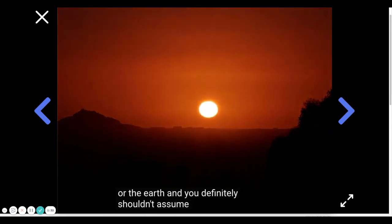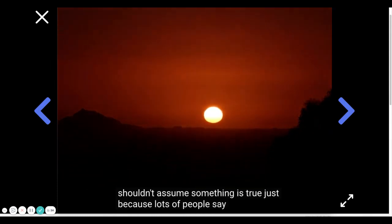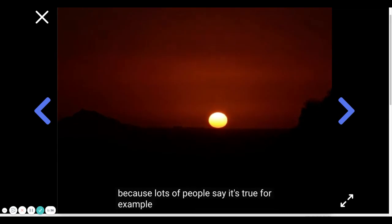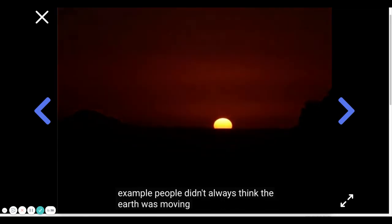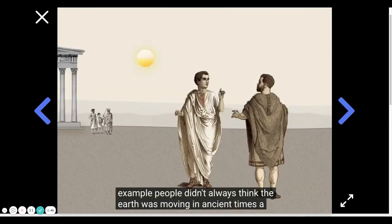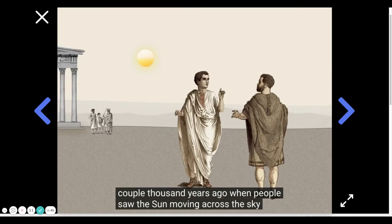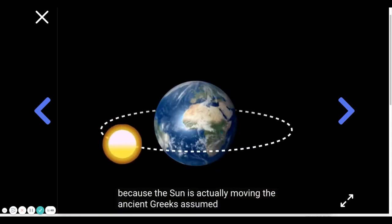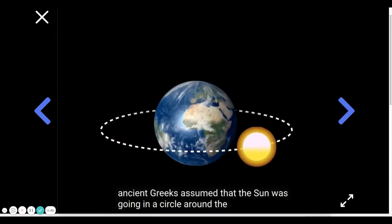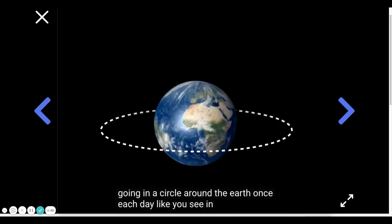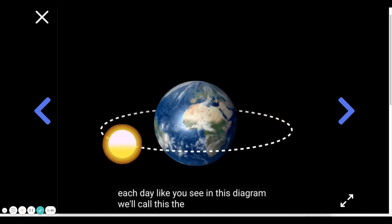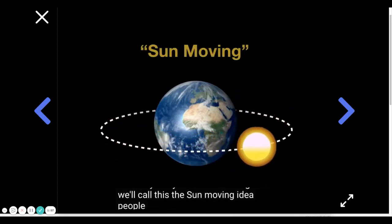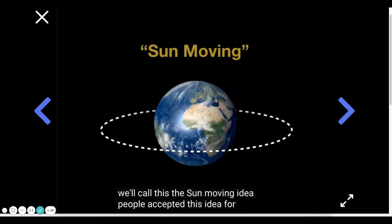You definitely shouldn't assume something is true just because lots of people say it's true. For example, people didn't always think the earth was moving. In ancient times, a couple thousand years ago, when people saw the sun moving across the sky, everyone would have told you it was because the sun is actually moving. The ancient Greeks assumed that the sun was going in a circle around the earth once each day, like you see in this diagram. We'll call this the sun moving idea. People accepted this idea for thousands of years.